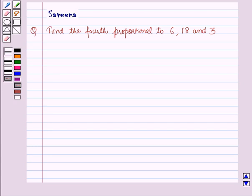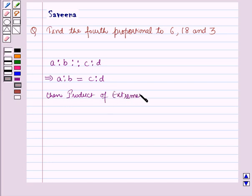Now before starting the solution, we should know a result of proportion. If a is to b as c is to d, which implies a:b = c:d, then product of extremes is equal to product of means.